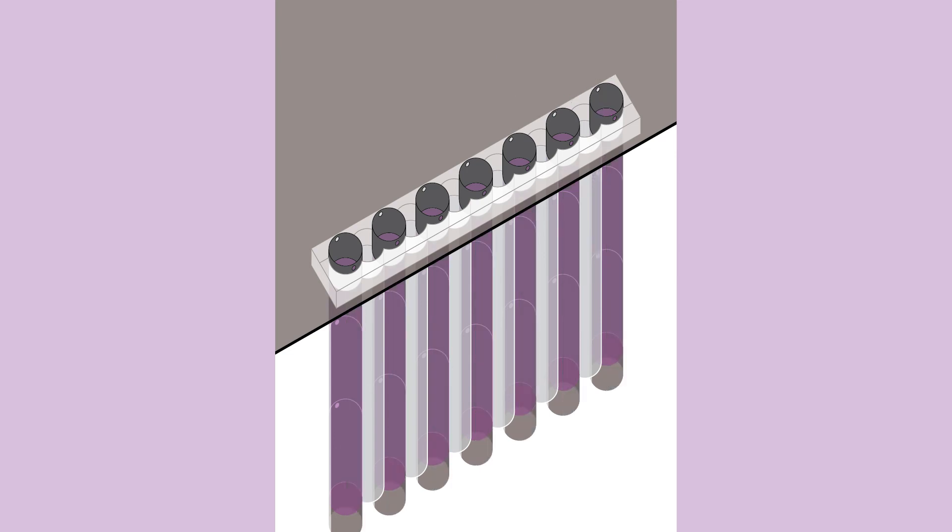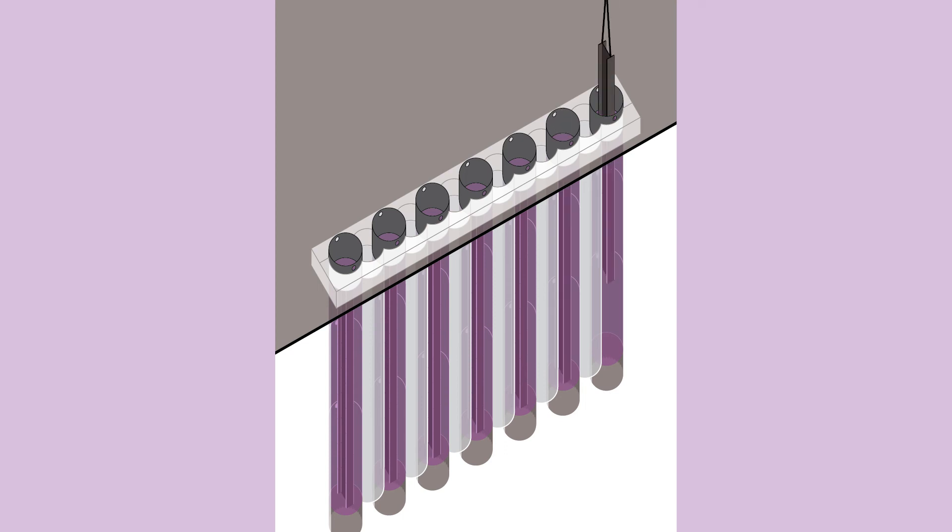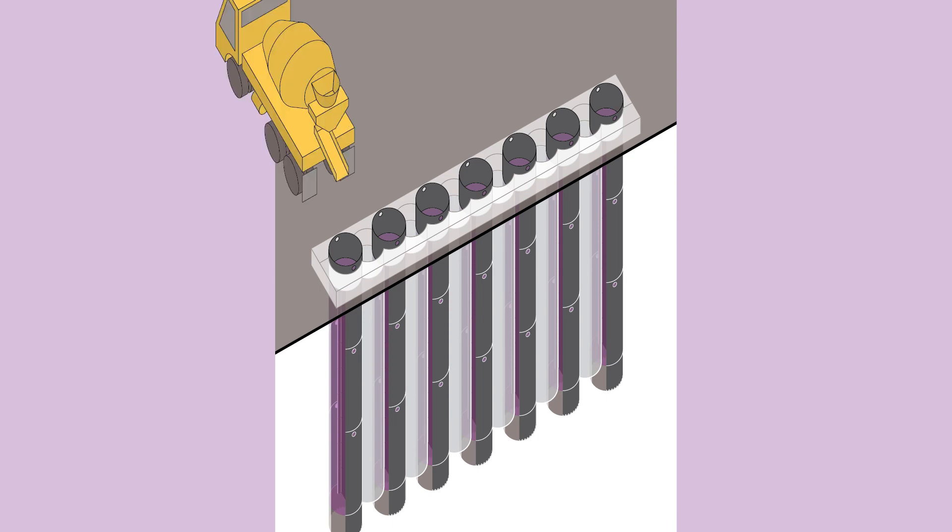After the secondary piles have been desanded, steel I-beams are installed to reinforce them. Once the steel reinforcement is in place, concrete is poured into the secondary piles.